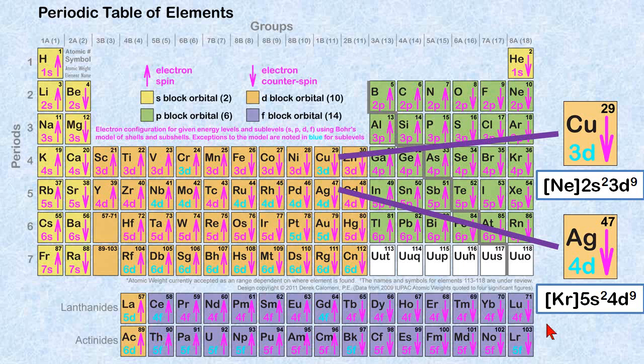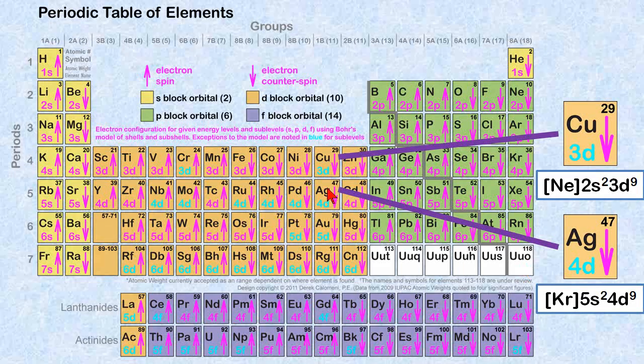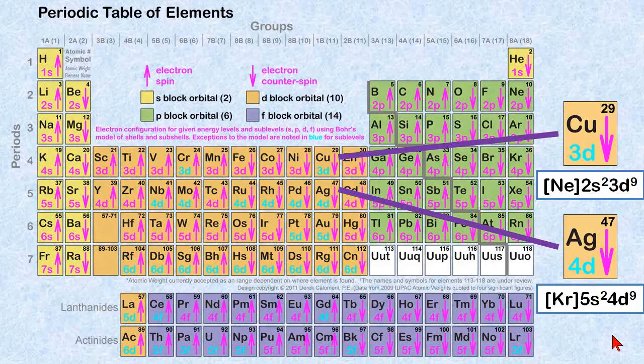There are some exceptions to Bohr's model. If you take a look here, instead of fluorescent magenta color, we have a blue color. For example, here at chromium and copper, we have 3D. And that just means that this element doesn't really follow Bohr's model. And if you look it up, you'll get something different than what you might expect right here, or for silver right here. Let's take a look at that.